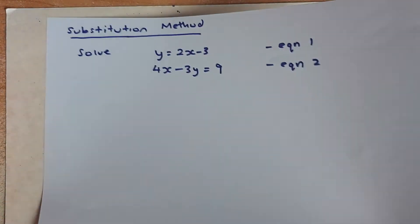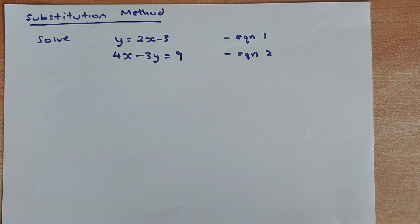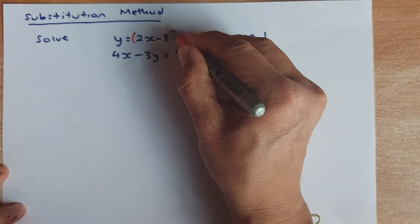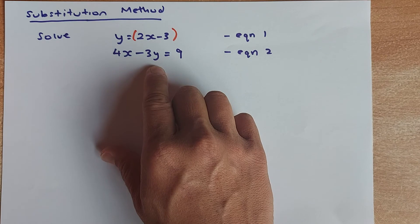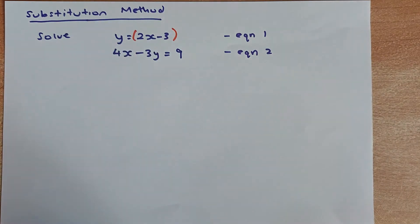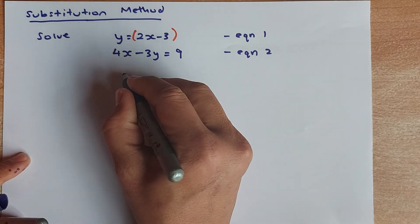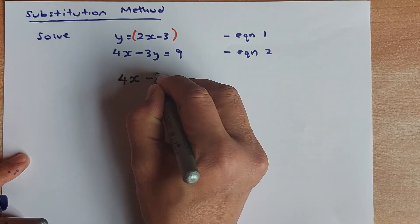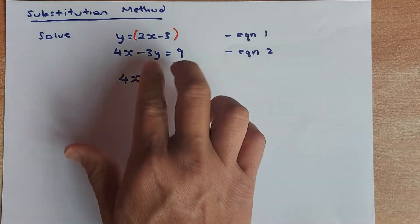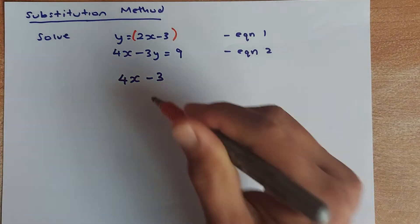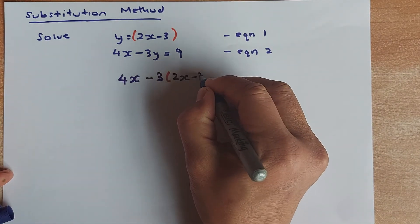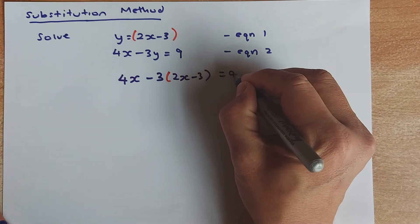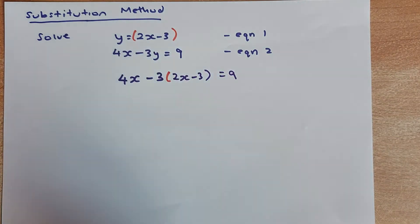The next method is called the Substitution Method, which is slightly different. You are given Y equals 2X minus 3 as one equation. Whenever you see a Y in the other equation, you replace that Y with this expression. So the second equation is 4X minus 3Y equals 9, and you replace Y with 2X minus 3.